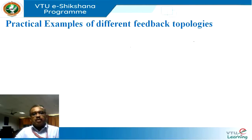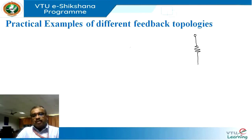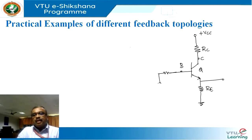We are now at a point where we can identify what kind of feedback topology is being used in a practical amplifier circuit. We will take examples to understand how to identify feedback networks. Consider an amplifier circuit where we take the output at the emitter terminal of an NPN transistor — you should recognize this as an emitter-follower circuit.